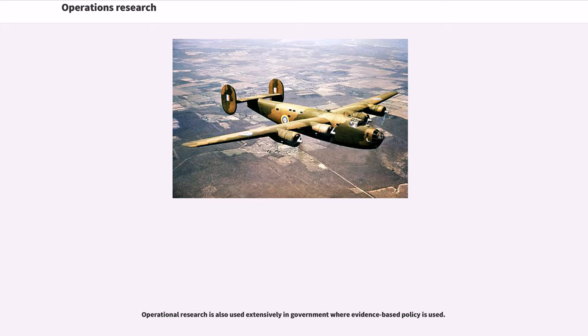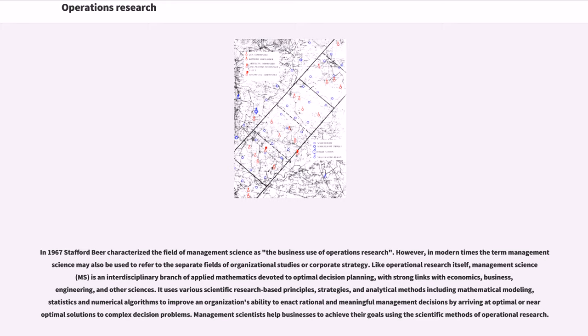Operational research is also used extensively in government where evidence-based policy is used. In 1967, Stafford Beer characterized the field of management science as the business use of operations research. However, in modern times the term management science may also be used to refer to the separate fields of organizational studies or corporate strategy. Like operational research itself, management science is an interdisciplinary branch of applied mathematics devoted to optimal decision planning, with strong links with economics, business, engineering, and other sciences.